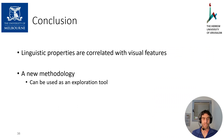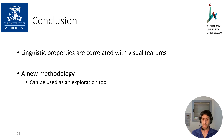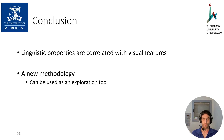We've shown that linguistic properties are correlated with visual features, most notably for the use of numerals. This new methodology can be used as an exploration tool for identifying interesting phenomena, such as the fact that animals are most commonly described using numerals, which was not shown in previous studies to our best knowledge. Next, additional small-scale but controlled experiments can look into these ideas. Thank you.